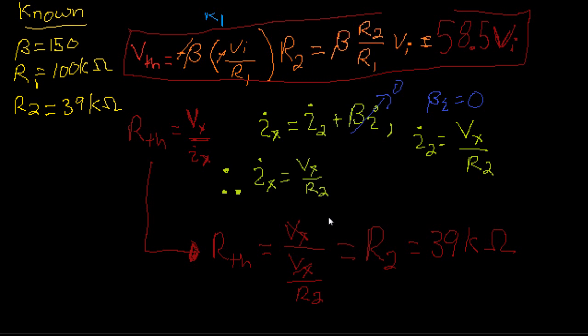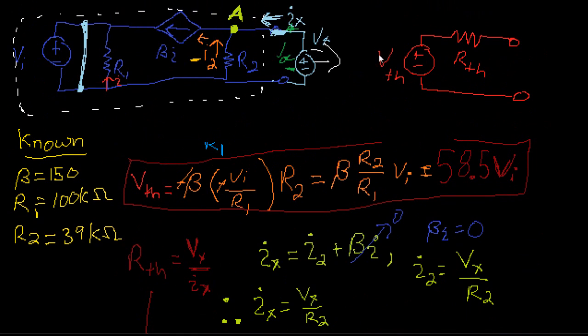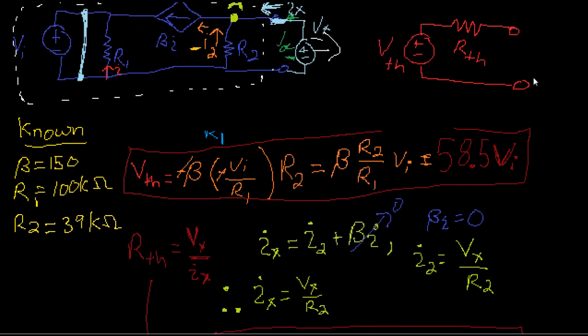And there you go. So we have our VTH and we have our RTH. So remember, RTH was 39k. Here's my little scroll bar. So up here, we could simply define VTH in terms of our input voltage, which is 58.5 VI. 58.5 VI. That's our VTH. And our RTH was just equal to our R2 on this side, which is equal to 39 kiloohms.